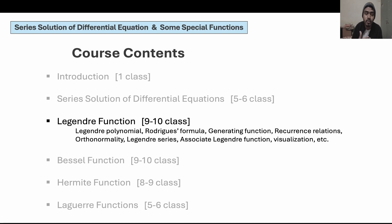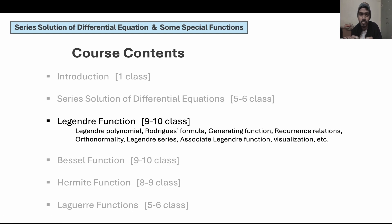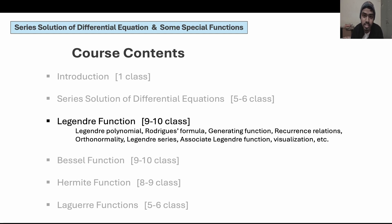In Fourier series we write functions as a linear combination of sine and cosine series; here we will be writing them as a linear combination of Legendre polynomials. Then we will be talking about a different kind of Legendre function — the associated Legendre function. We will try to visualize and graph the Legendre and associated Legendre functions to see how they look. This visualization is very important, and I will go to the application part so you will understand why visualization matters.